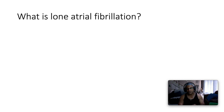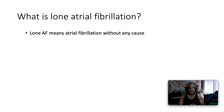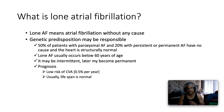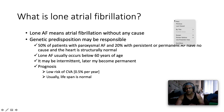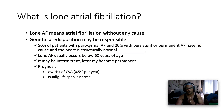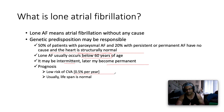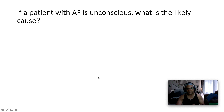What is lone atrial fibrillation? Lone AF means atrial fibrillation without any particular etiology — genetic predisposition may be responsible. 50% of patients with paroxysmal AF and 20% with persistent or permanent AF have no identifiable cause and the heart is structurally normal. Lone AF usually occurs in those below 60 years of age, may be intermittent and later become permanent. The prognosis carries a very low risk of CVA, about 0.5% per year, and lifespan is usually normal.